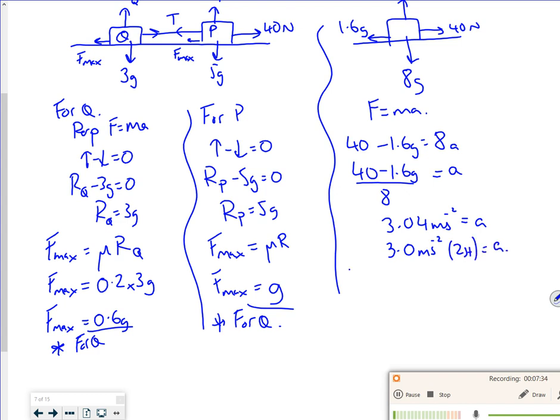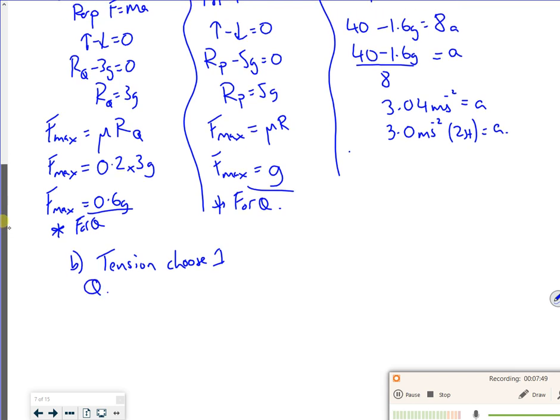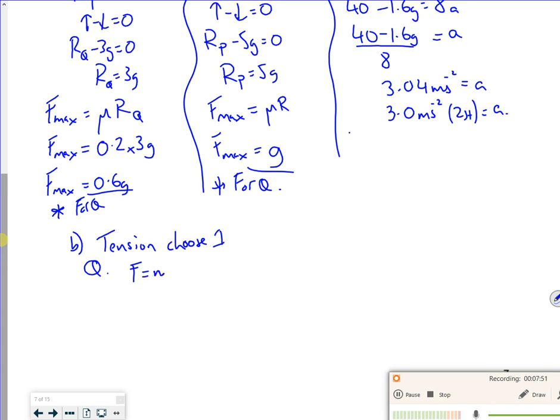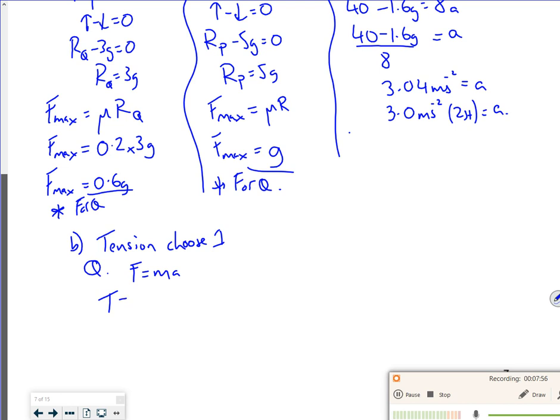So that's the acceleration. Part B says find the tension. So if I just choose one of them, it doesn't matter which one I do. So for part B for the tension, I'm just going to choose one. So if I do Q, because it's got all that going on, then for F equals ma, the force in the direction of the travel is my tension. The Fmax is there, it's 0.6g.